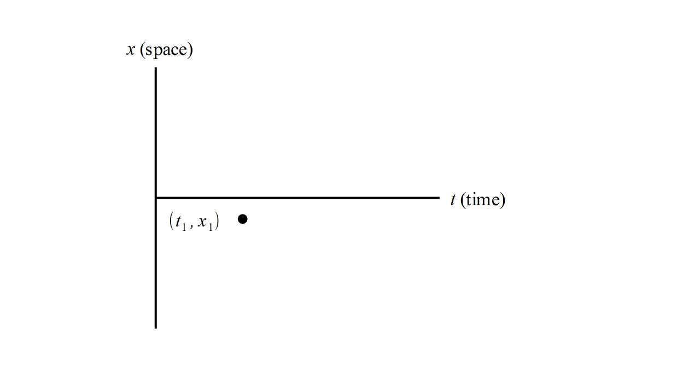Points in space-time correspond to events which occur at a specific time and place. Consider the three events shown here and specifically the relation between the first event and the other two.